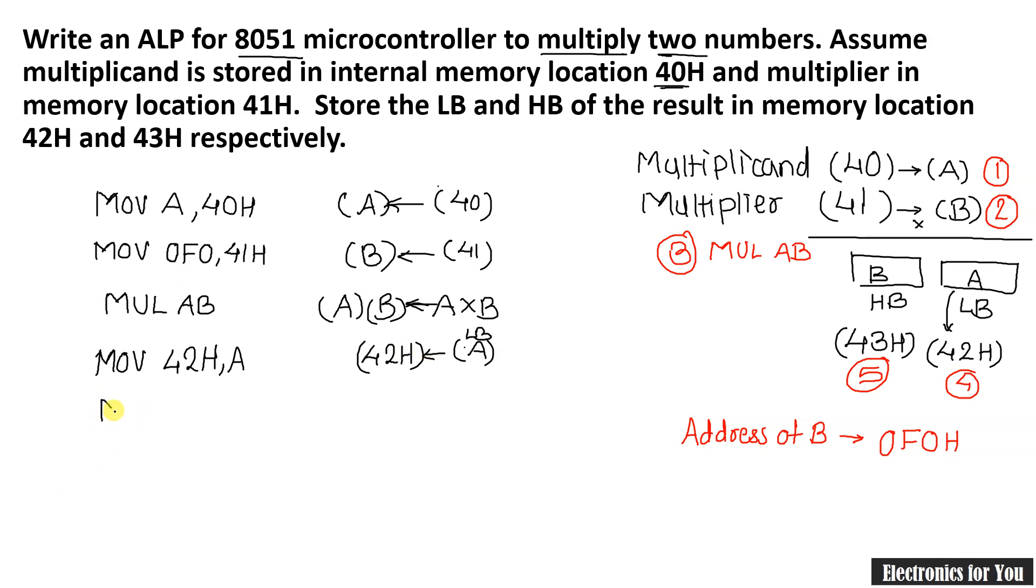Now we have to move the higher byte. Higher byte is at the 43H and it is from B register. And therefore, again, I am using 0F0H as the address of B register. That is B register's content is moved to 43H.